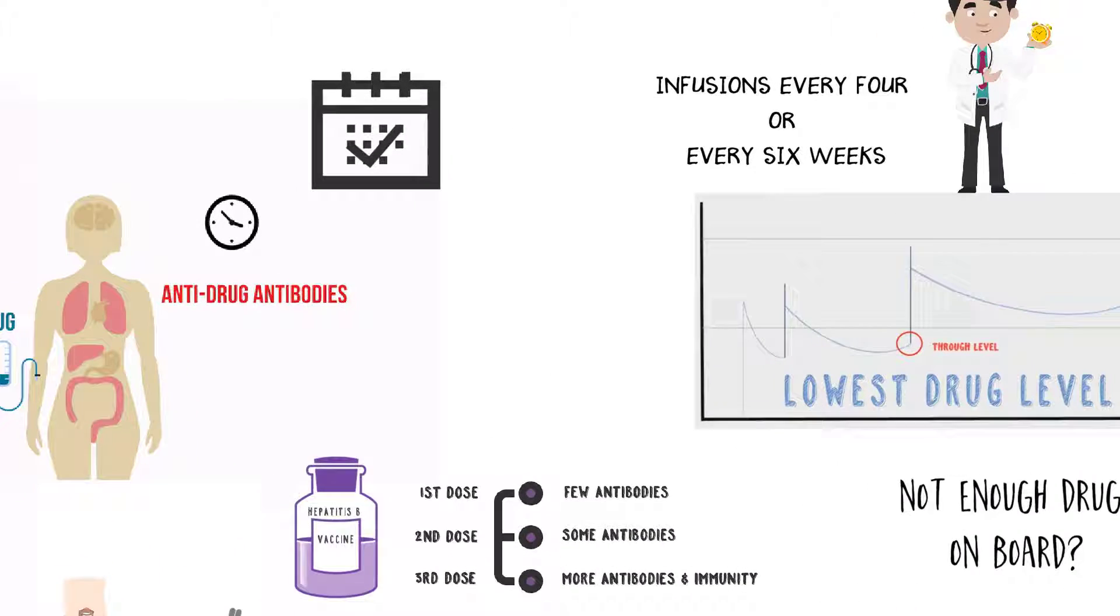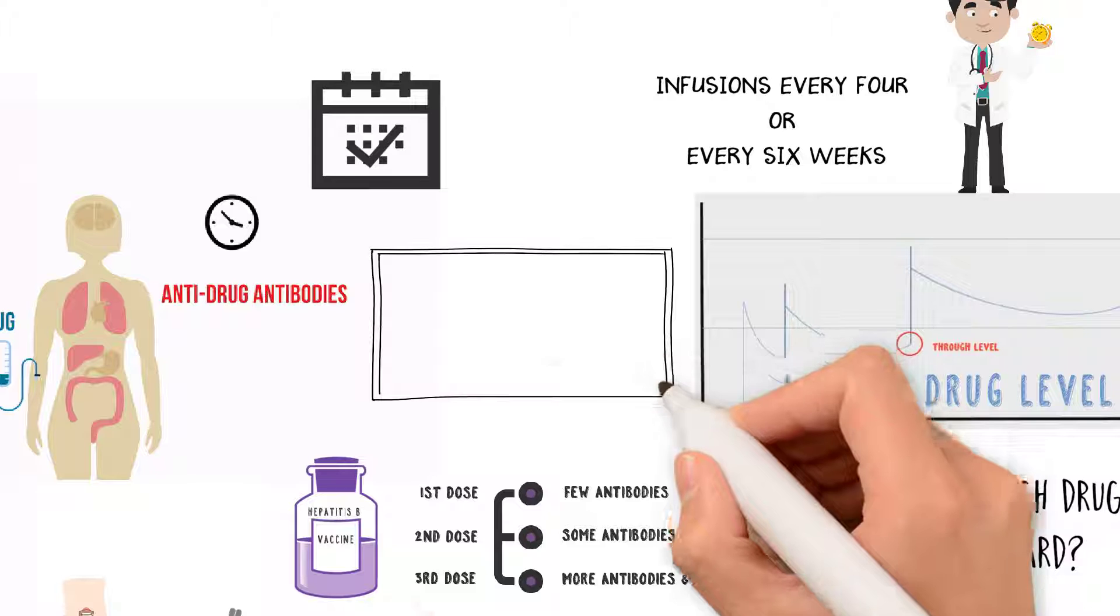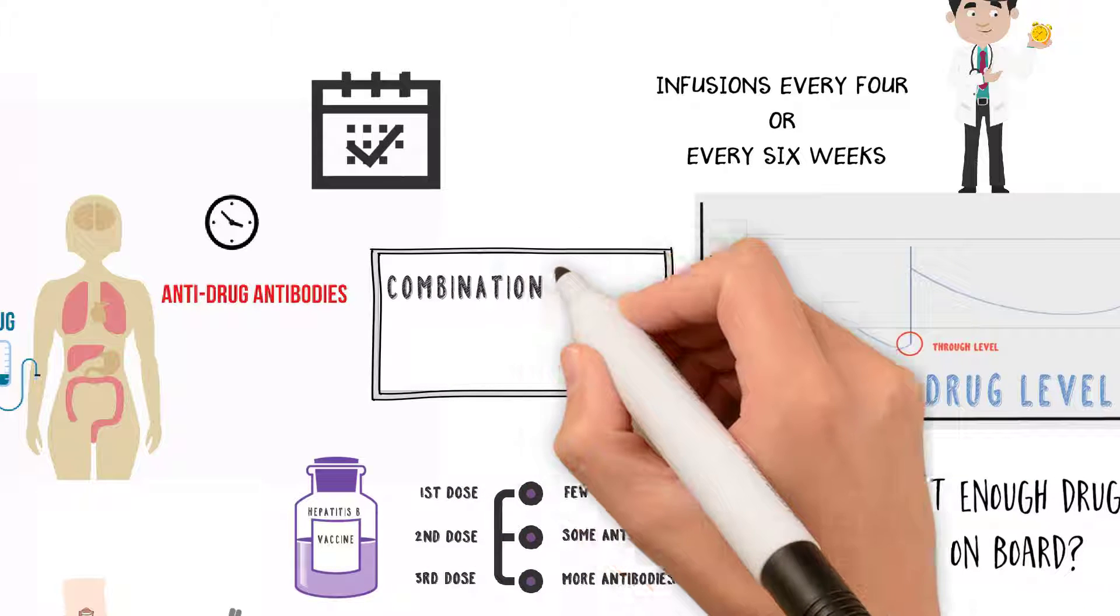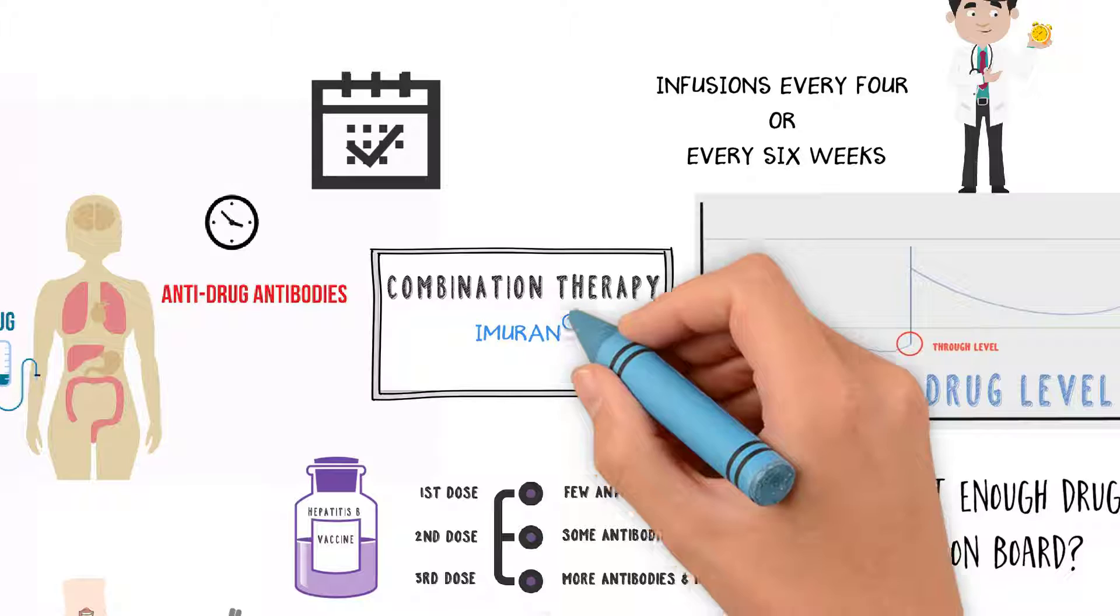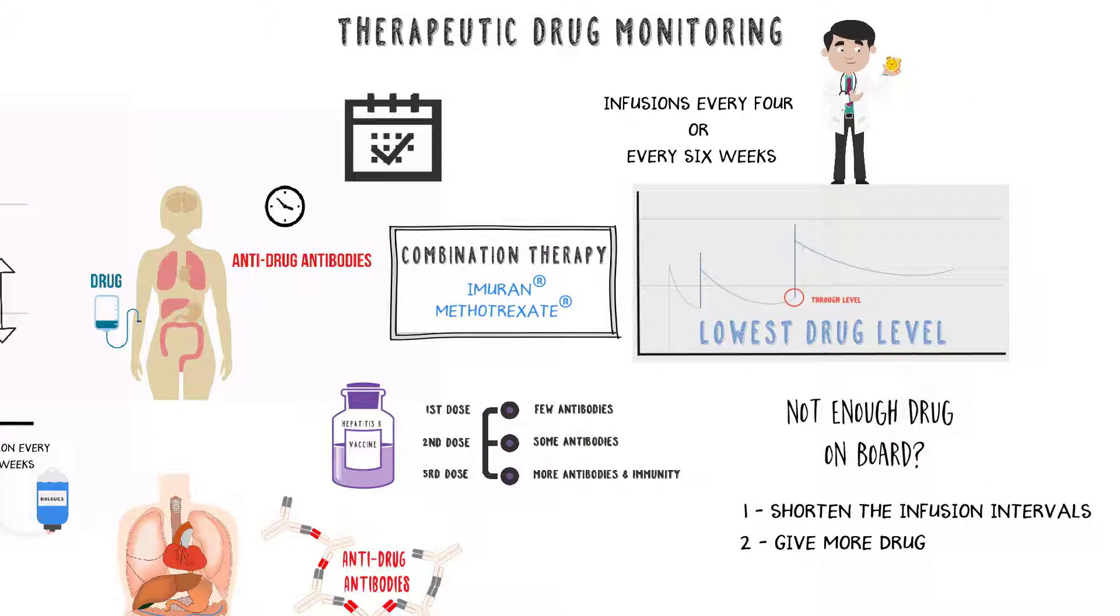The other way to try to reduce the chance of developing antibodies is also to add combination therapy with something like Imuran or Methotrexate, and the idea is to try to prevent the body from developing these antibodies.